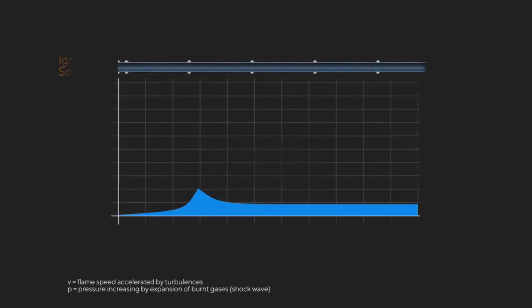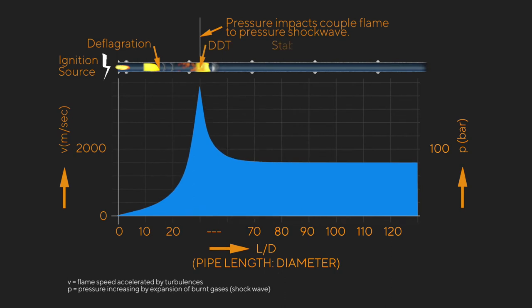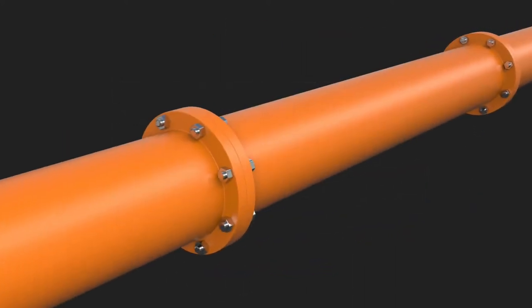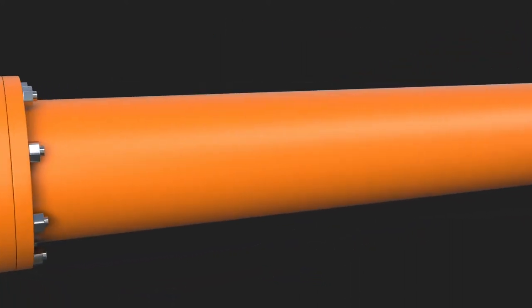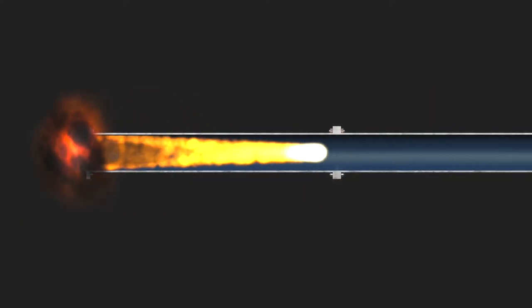However, due to the gas mixture and changes in the pipeline geometry, further unpredictable DDTs may occur, resulting in what is known as a galloping detonation. The location of the incredibly destructive forces of unstable detonation cannot be predicted with any certainty.